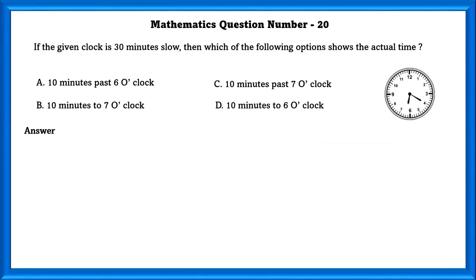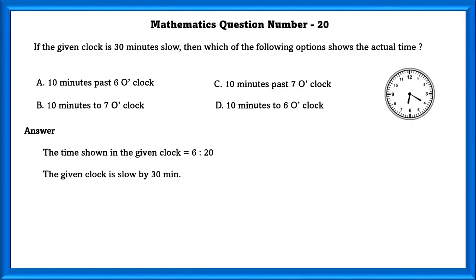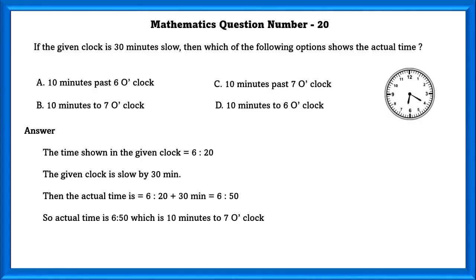Mathematics question number 20. If the given clock is 30 minutes slow, which of the following options shows the actual time? The time shown on the clock is 6:20. Since the clock is slow by 30 minutes, the actual time is 6:20 plus 30 minutes, which equals 6:50 — that is 10 minutes to 7 o'clock.